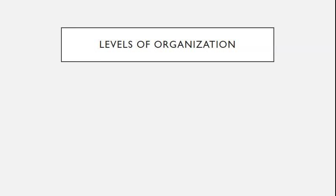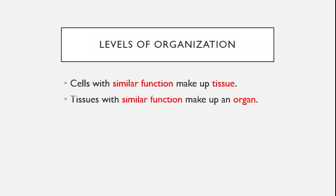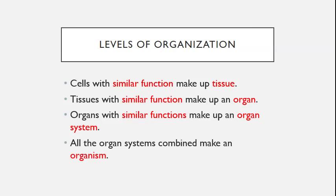Right under the Levels of Organization pyramid are a series of descriptive sentences we'll complete next. Cells with similar function make up tissue. Tissues with similar function make up an organ. Organs with similar functions make up an organ system. All the organ systems combined make an organism.